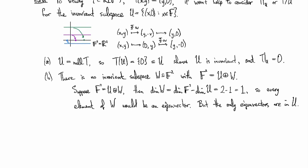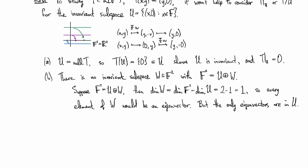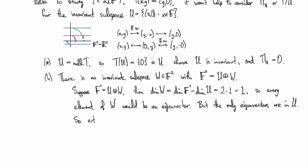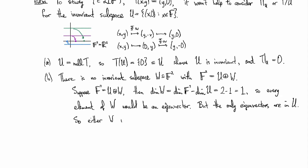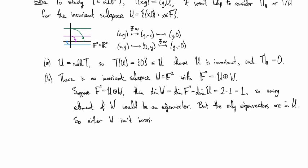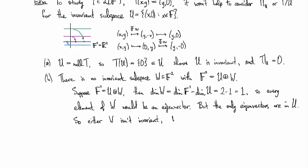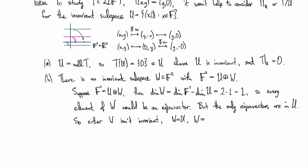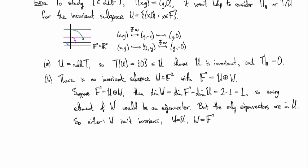And so what does that tell you? That tells you that either W isn't invariant, or else W is equal to U, or else W is equal to F². Those are our only possibilities.